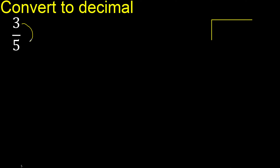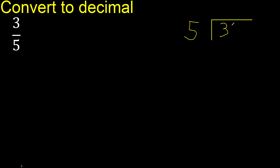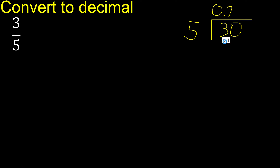3 divided by 5. 3 is less than 5, therefore complete always with 0, and write 0 point. Point only once. 5 multiplied by 7 is 35.